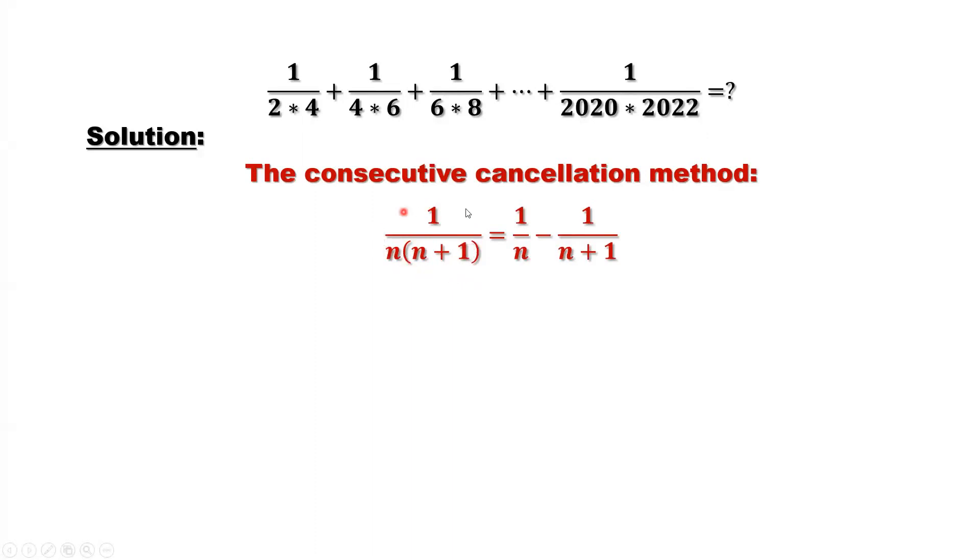This can be rewritten as a difference of two terms. First term is 1 over n. The second term is 1 over n plus 1. By simple algebra, you can easily derive this result.